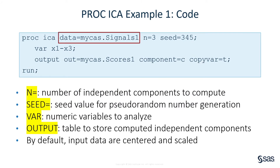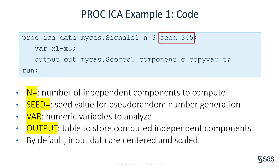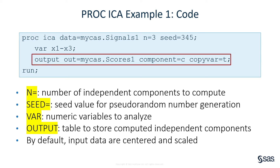The signal data set is named signals1. Because PROC ICA is a SAS Viya procedure, the data set is loaded into the CAS session, myCAS. Here, we specified n equals 3, which tells PROC ICA to compute three independent components, and a seed value for pseudo-random number generation, which is used to initialize the demixing matrix. Three variables x1, x2, and x3 are specified in the var statement for the analysis. The output statement stores the computed independent components in the output data table named scores1, and names the components c1, c2, and c3.